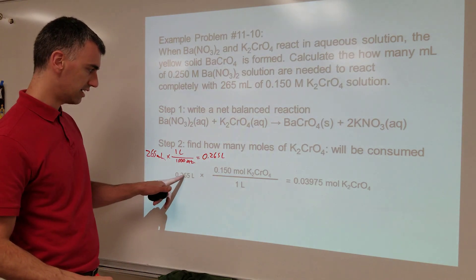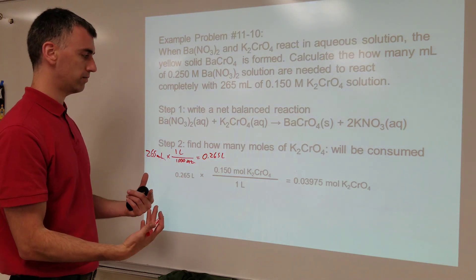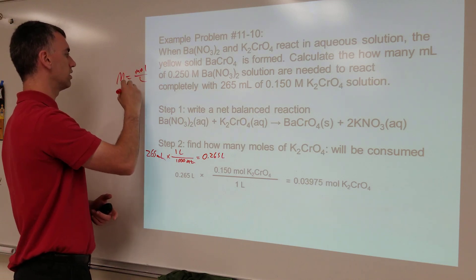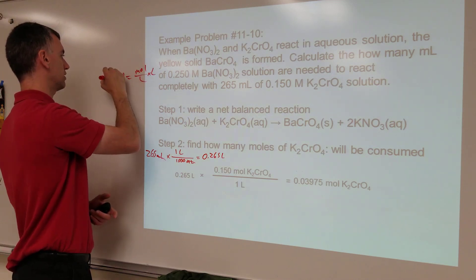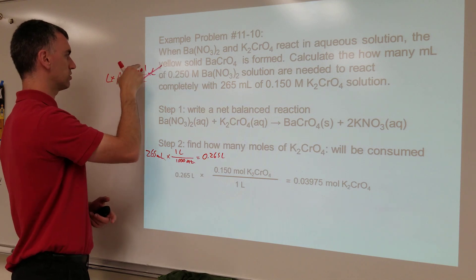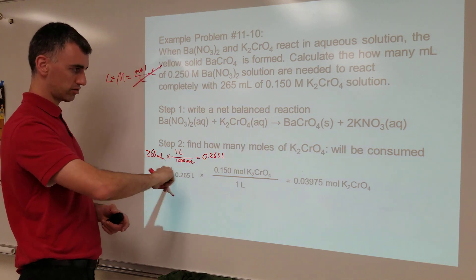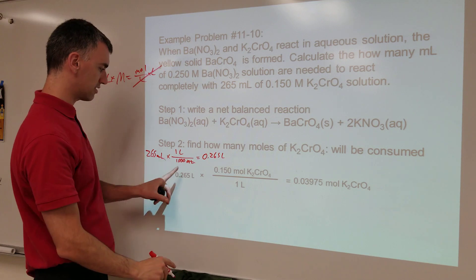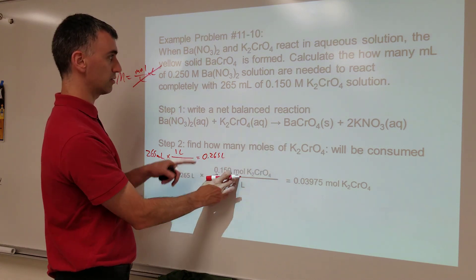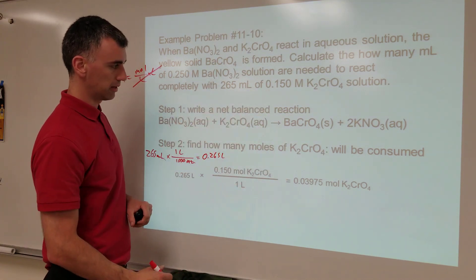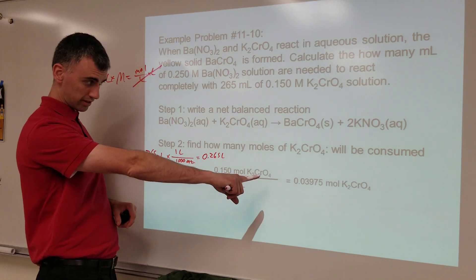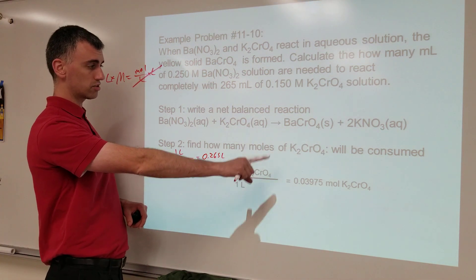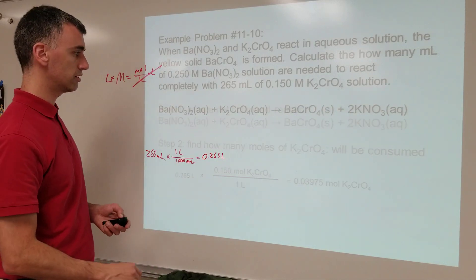Once that's done, you can do the rest. Remember, molarity equals moles per liter, so if you multiply both sides by liters, then liters cancel liters to get moles by itself. So we're trying to convert to moles, and liters times molarity does that. This is an intermediate answer — you have moles of one chemical. The reason you calculate moles for this one and not the other is because this is the only one you can get moles out of.